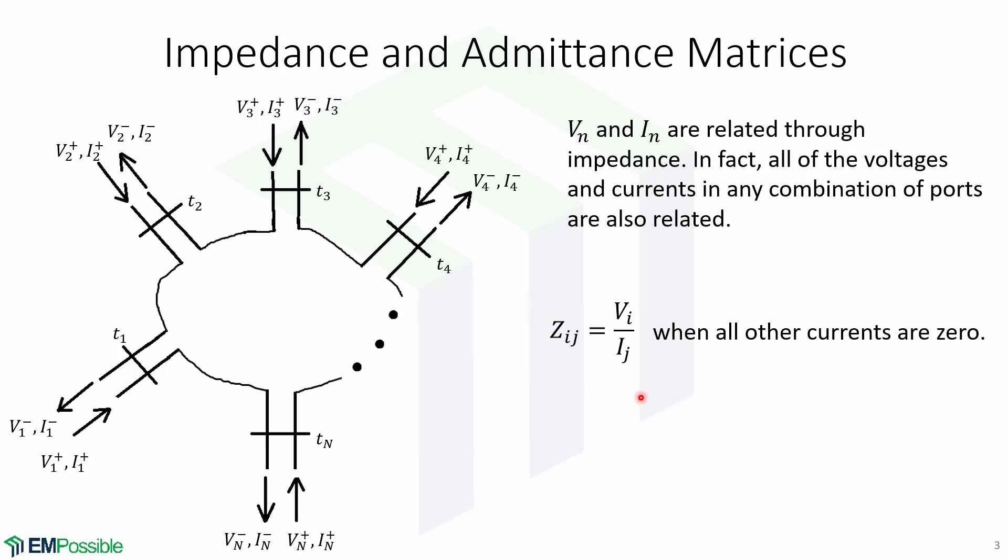We can measure Zij by driving port J with current Ij. We leave all the other ports open so that all other currents are zero and we measure Vi.